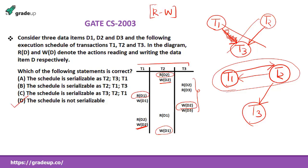Guys, I think you know this concept very well. What you have to do is just draw the precedence graph using the schedule and check for cycles. If there is no cycle, it is serializable; otherwise, it is not. If you still have some doubts, please refer to the relevant video again for more clarity. Let us move towards the next question.